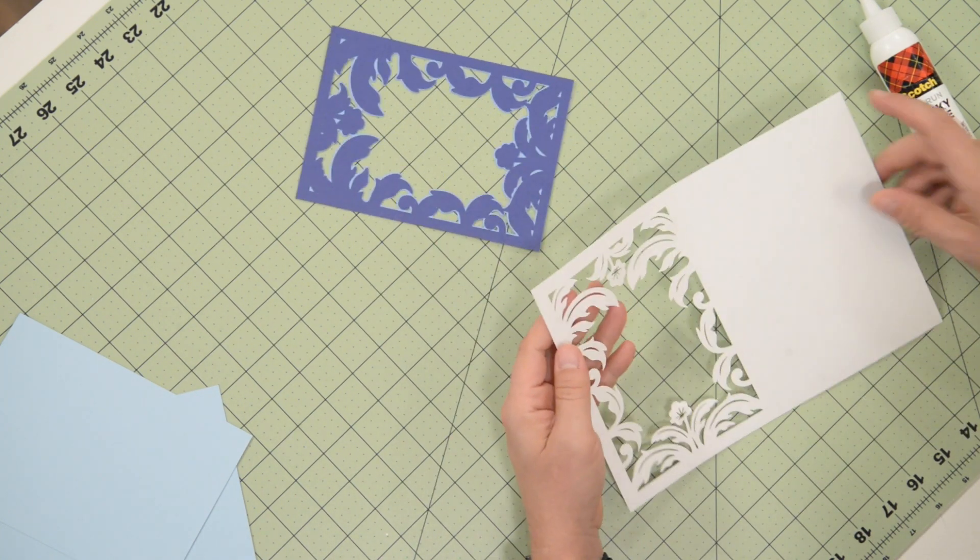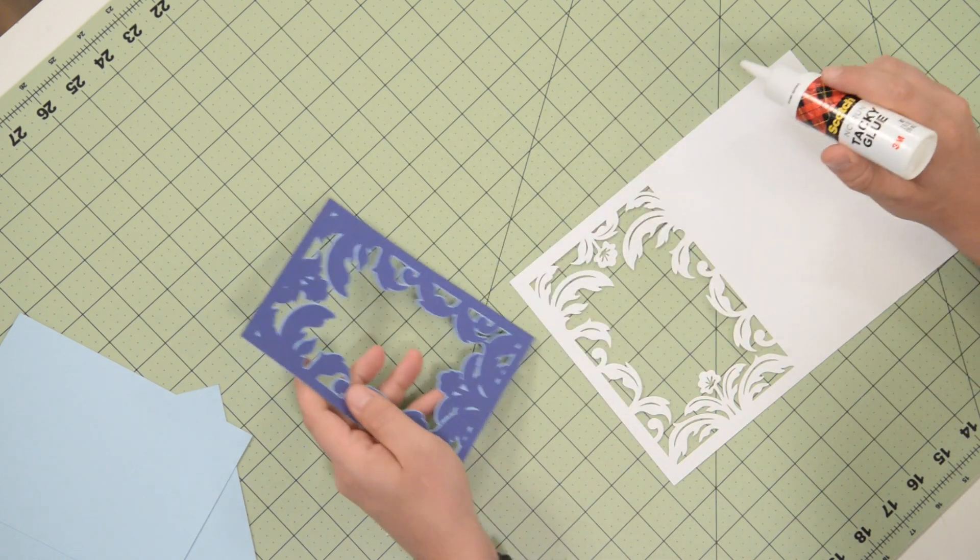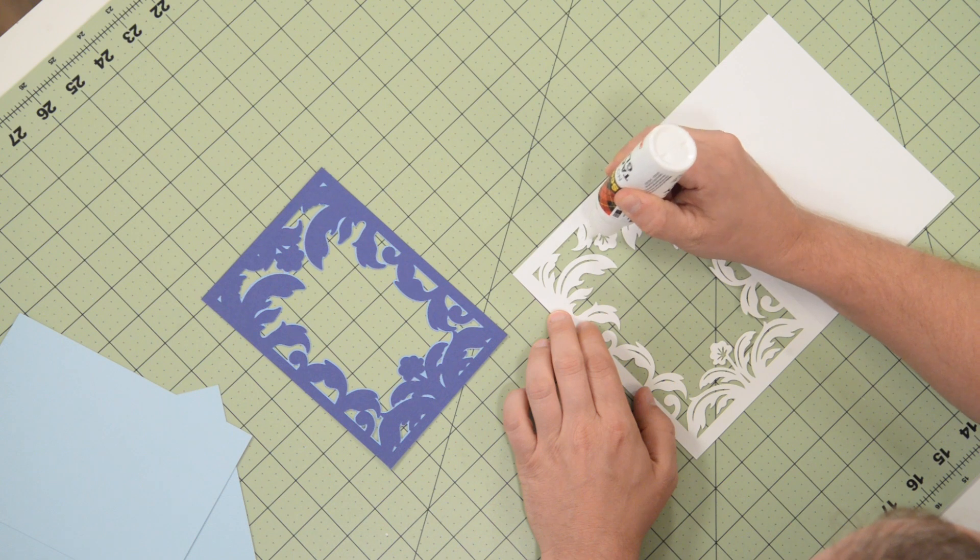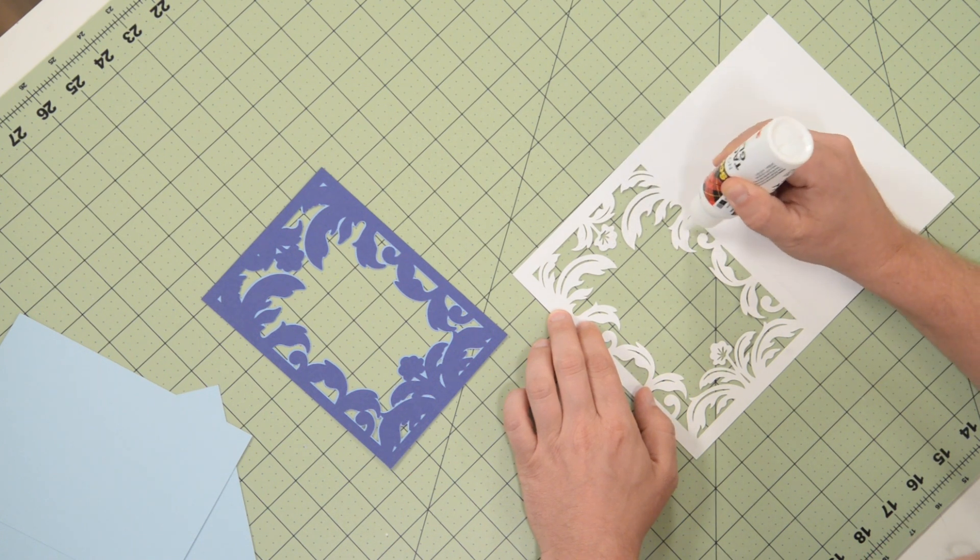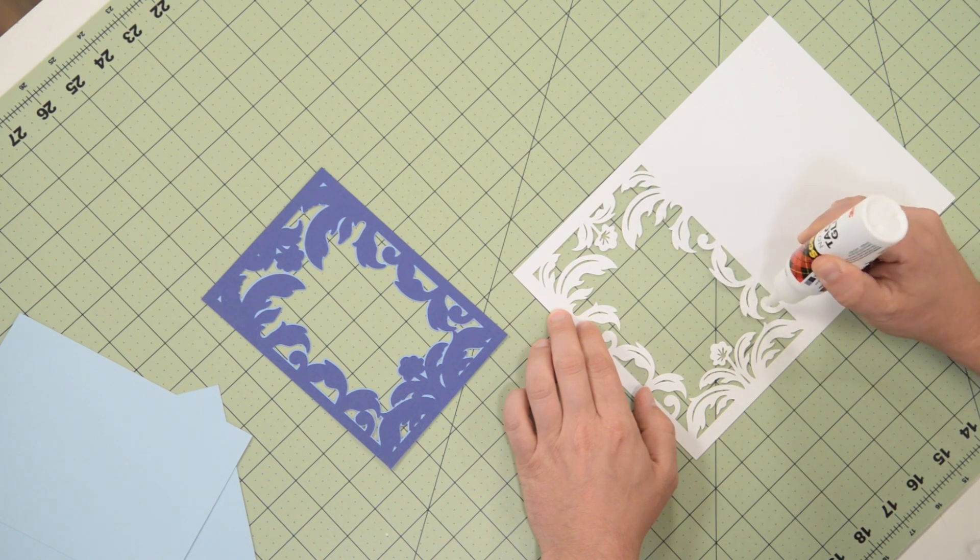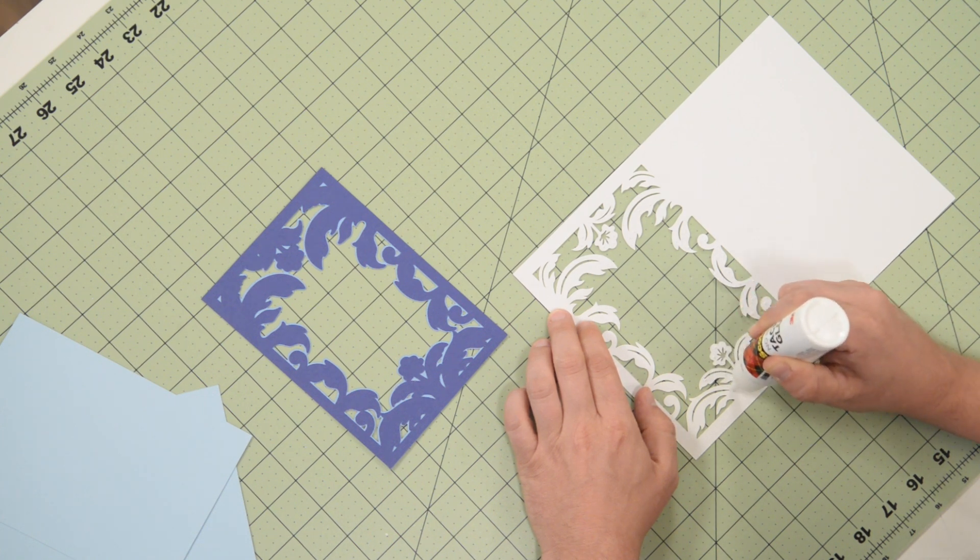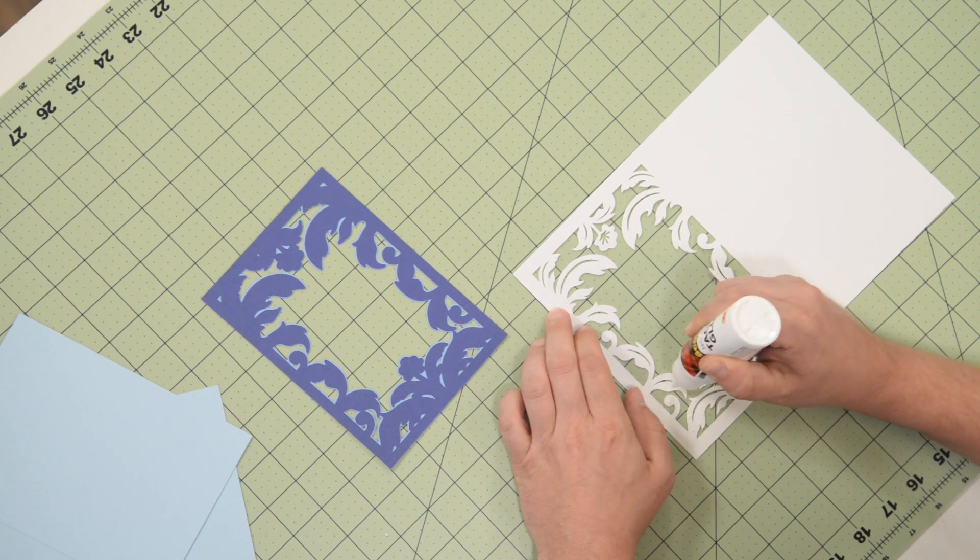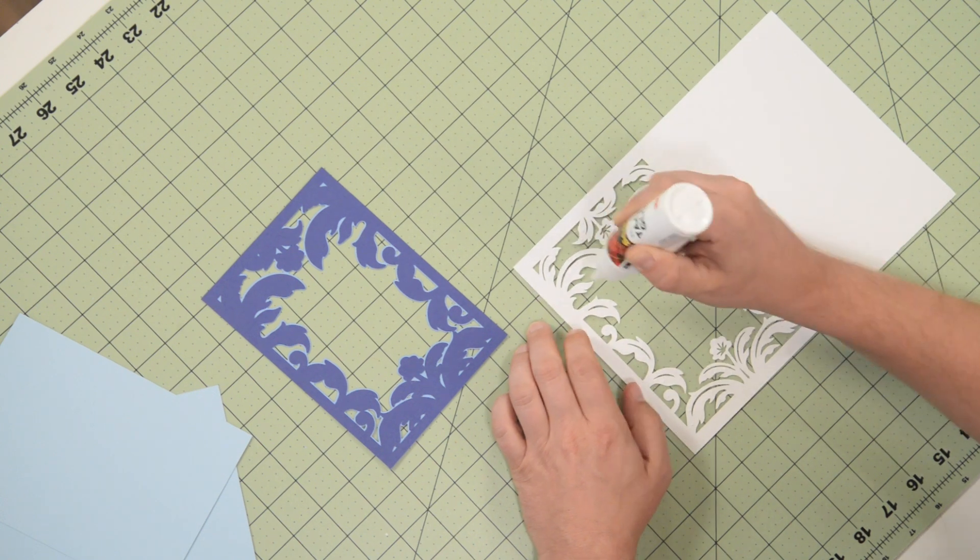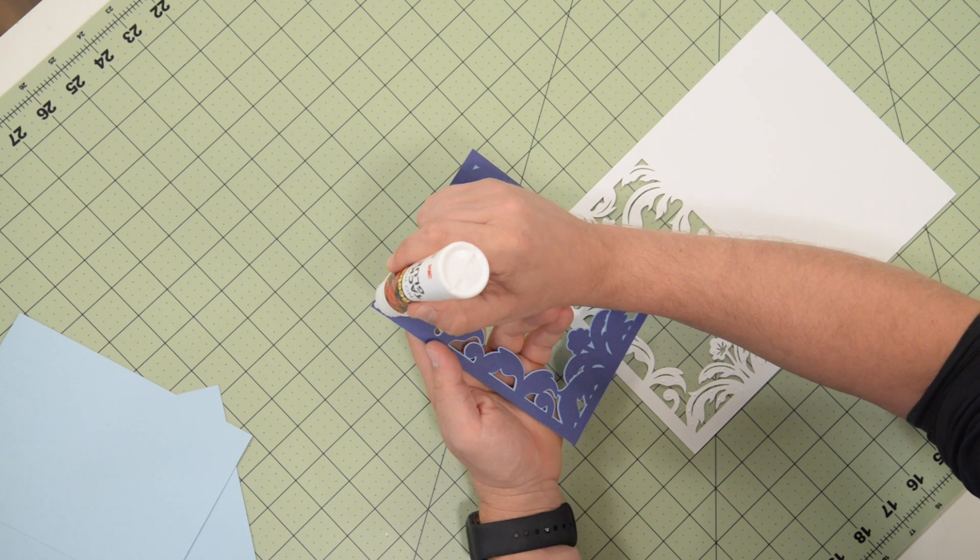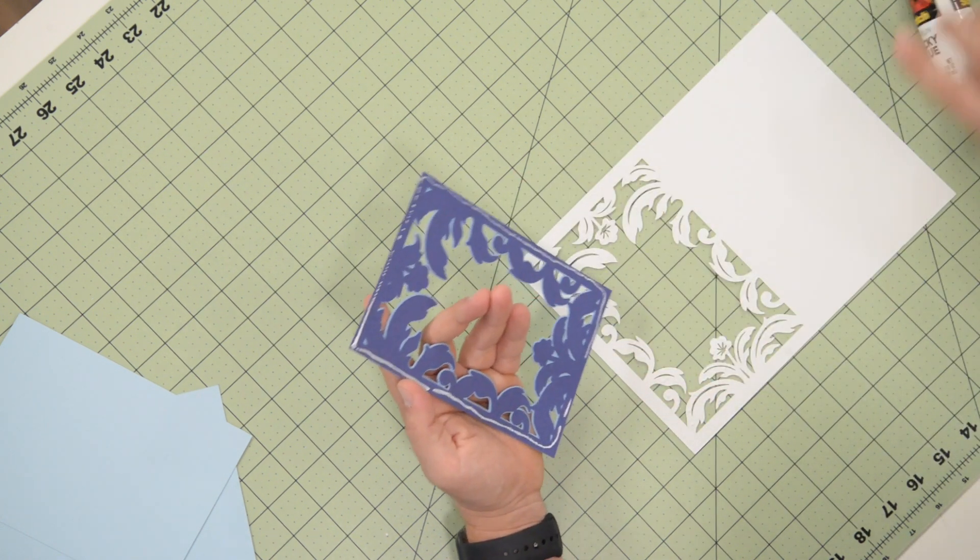So we'll flip this over. What we're going to do is put some glue on these little details, but we're also going to put glue around the perimeter of this part. I'm going to do a series of little dots throughout this design. Once I have my dots in as many places as I can without going too overboard, I'll probably just dab them with my finger a little bit to thin it out so that it doesn't spread onto the layer that we're going to attach to it. We don't want any of that glue to end up on the beautiful blue paper that we have.